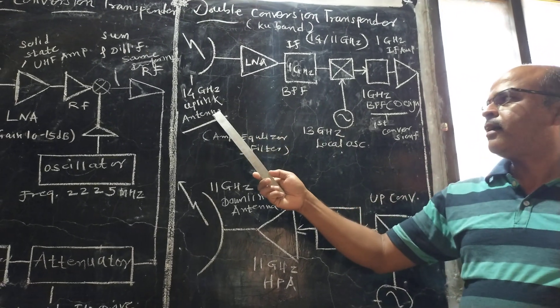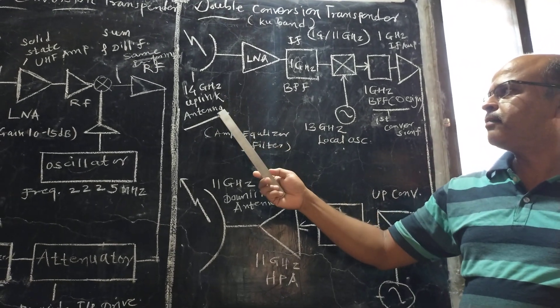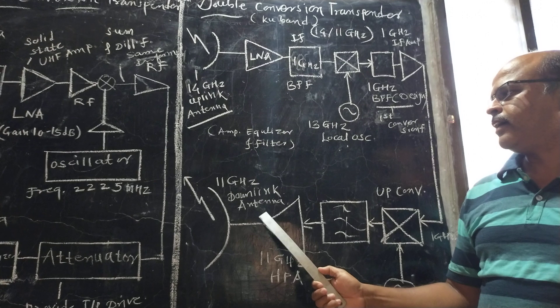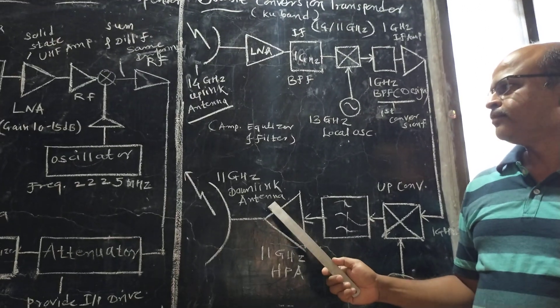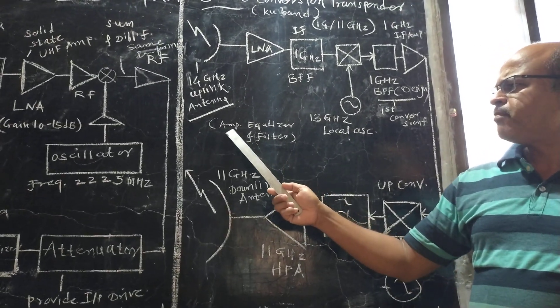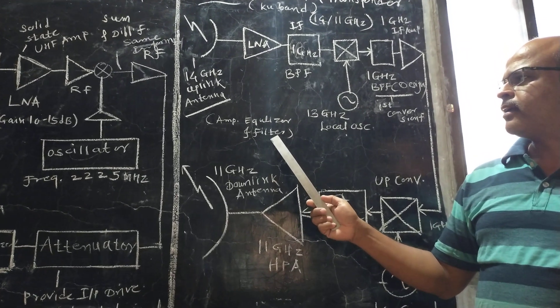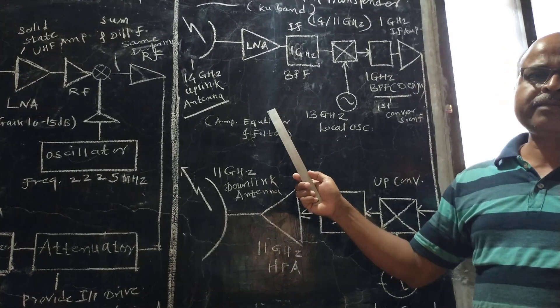In this double conversion transponder, a 14 GHz uplink antenna and 11 GHz downlink antenna are used. Generally, amplifiers, equalizers, and filters are operated at intermediate frequency.